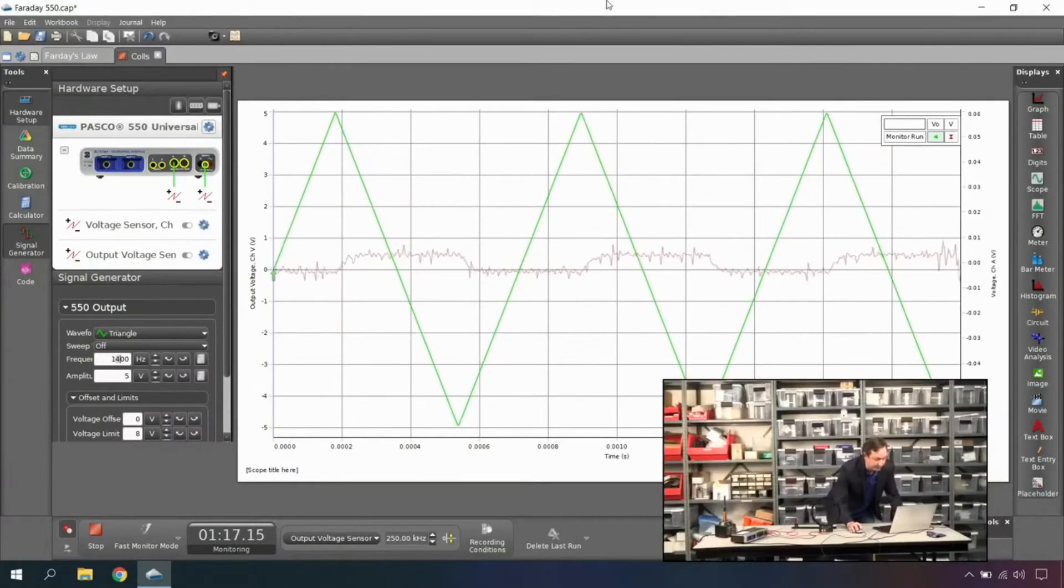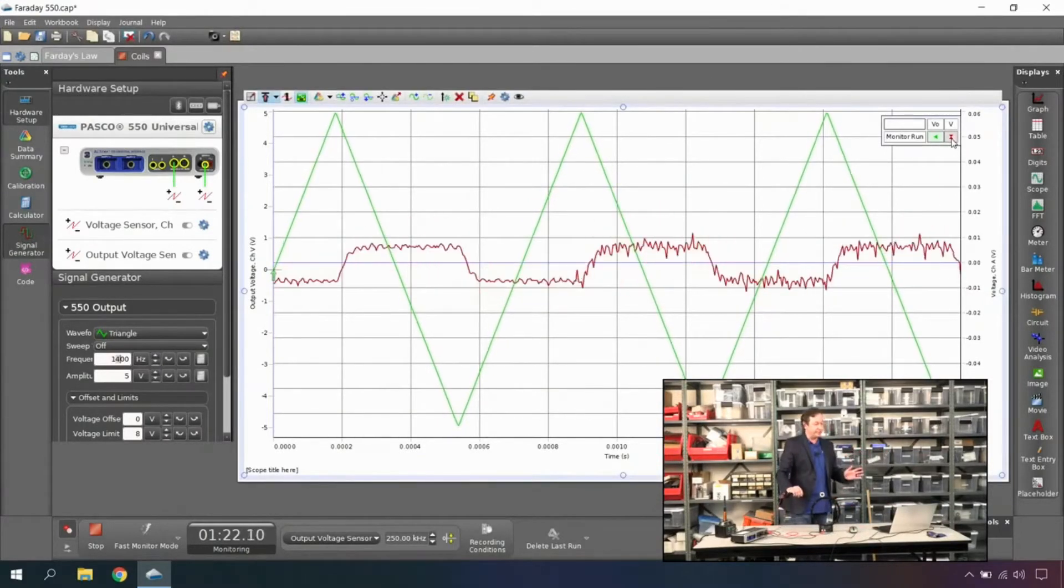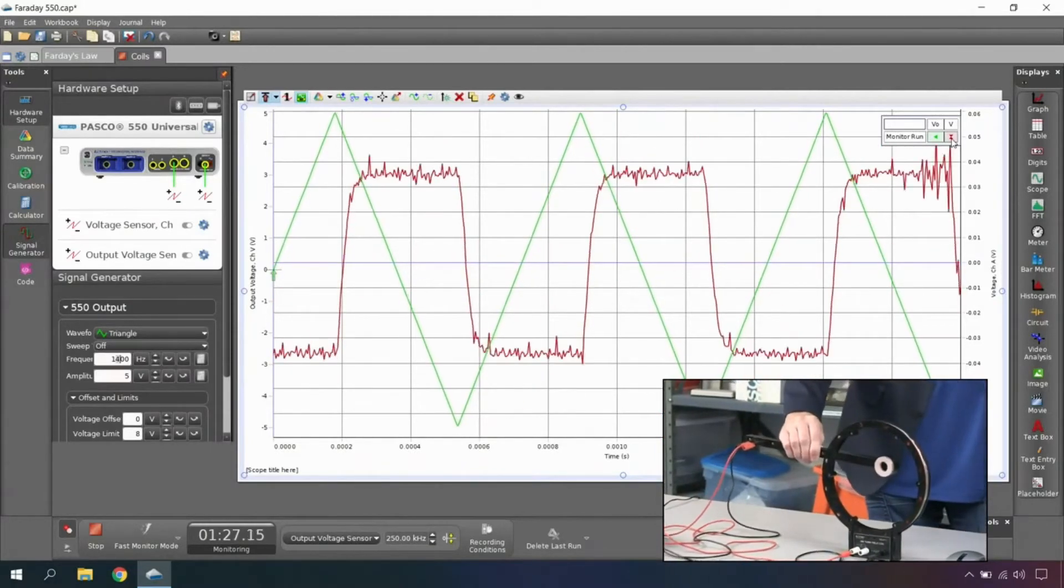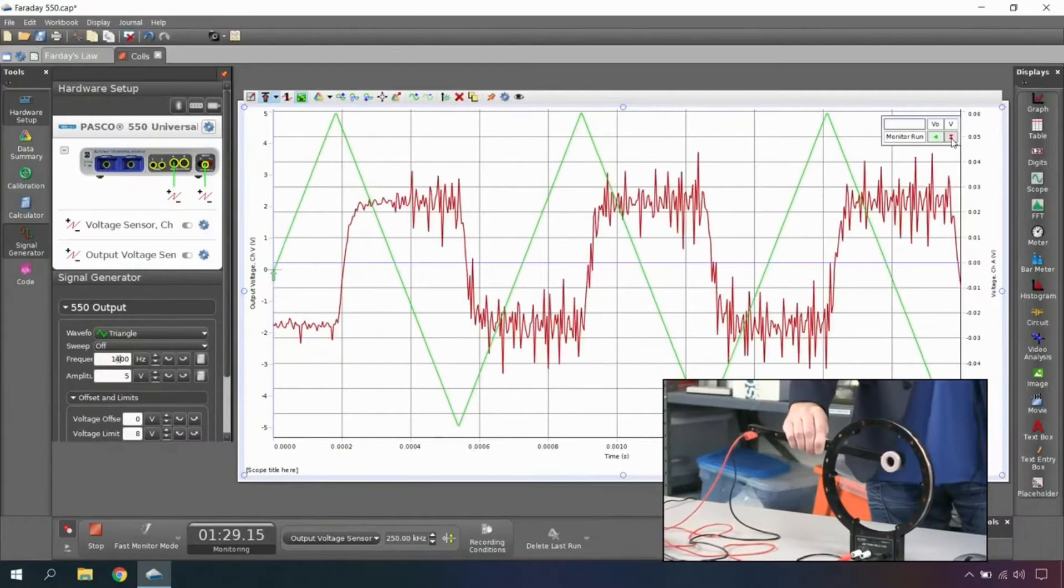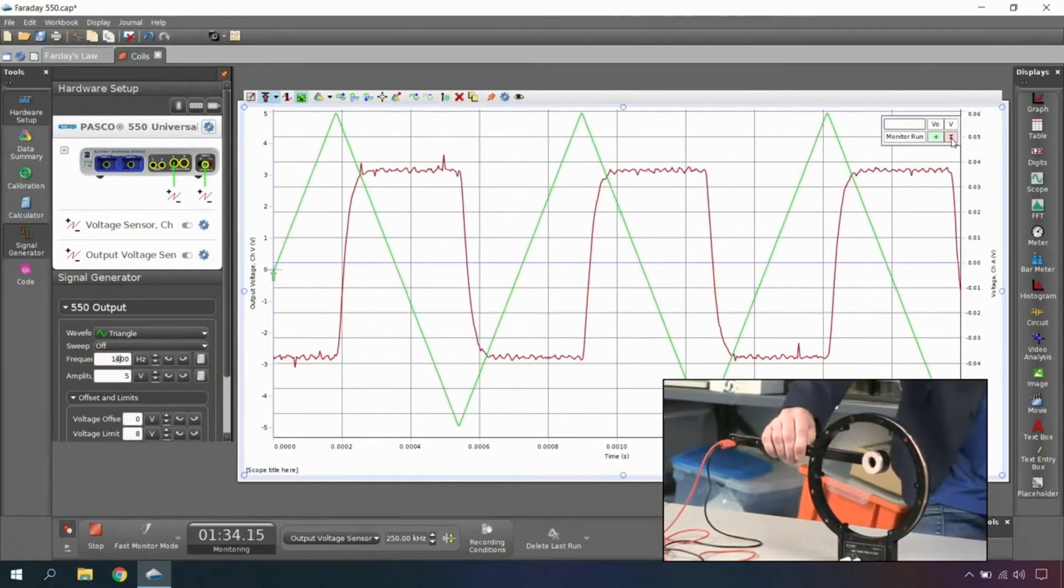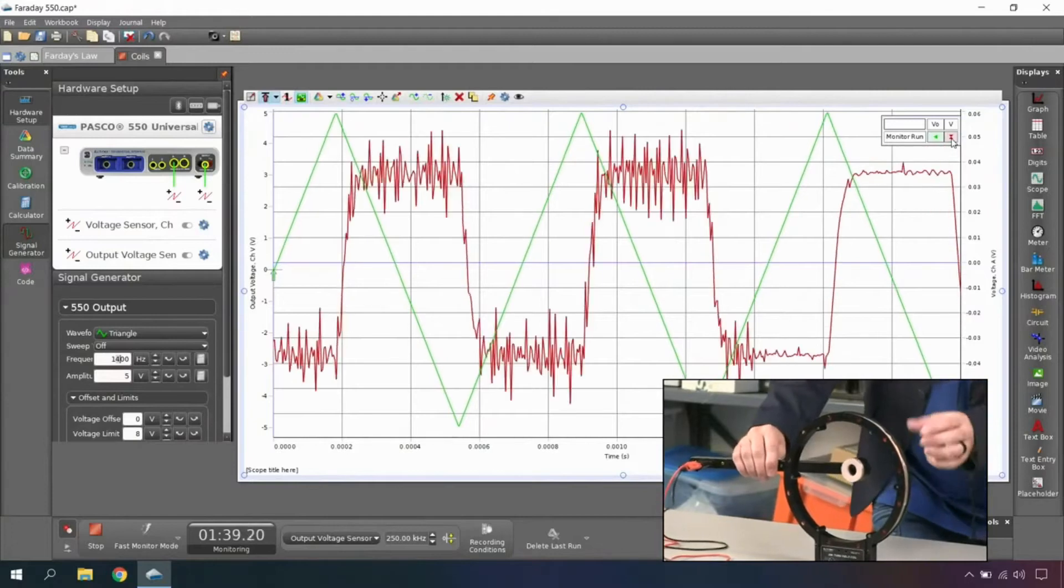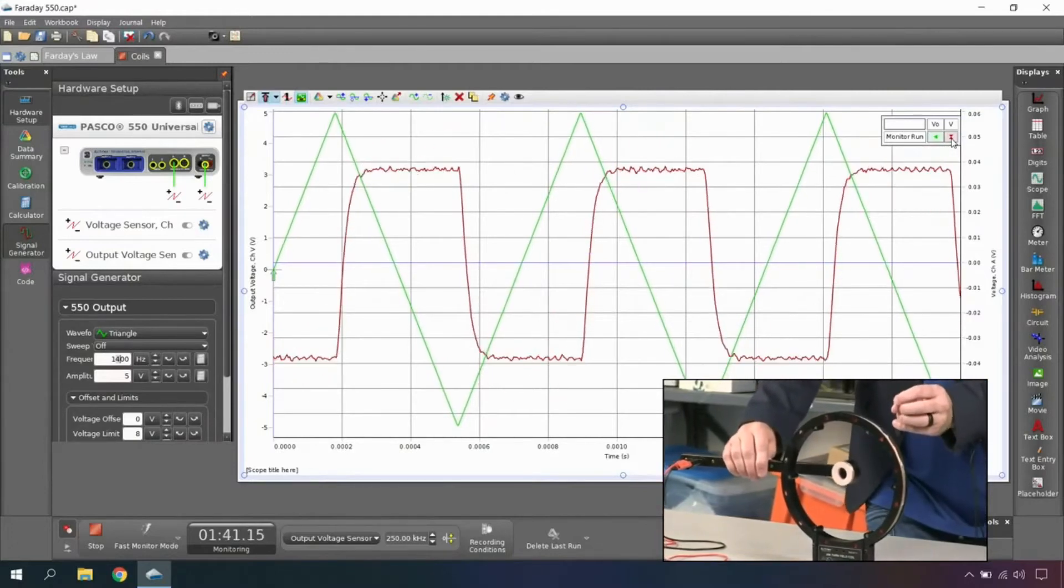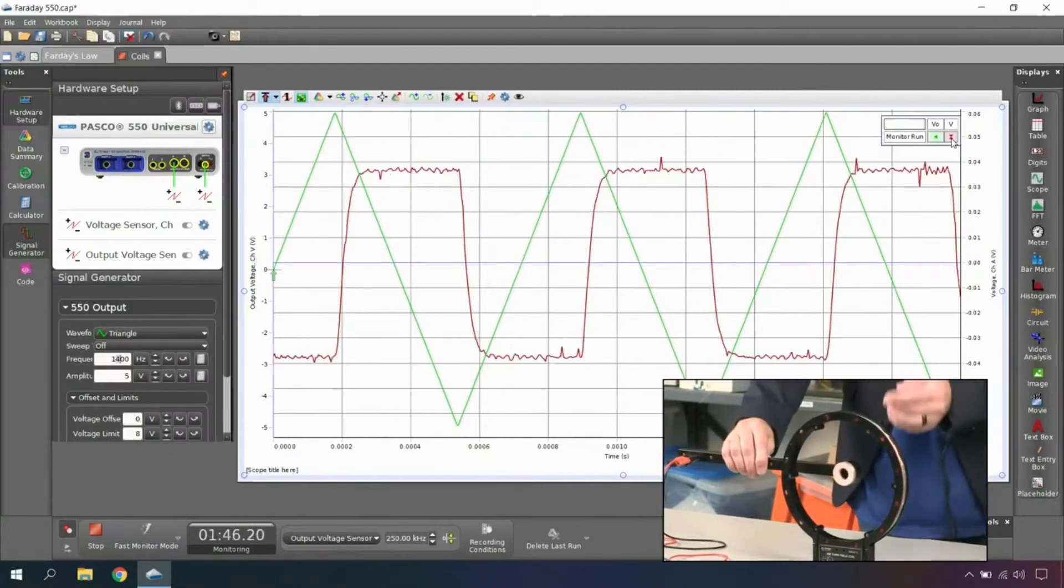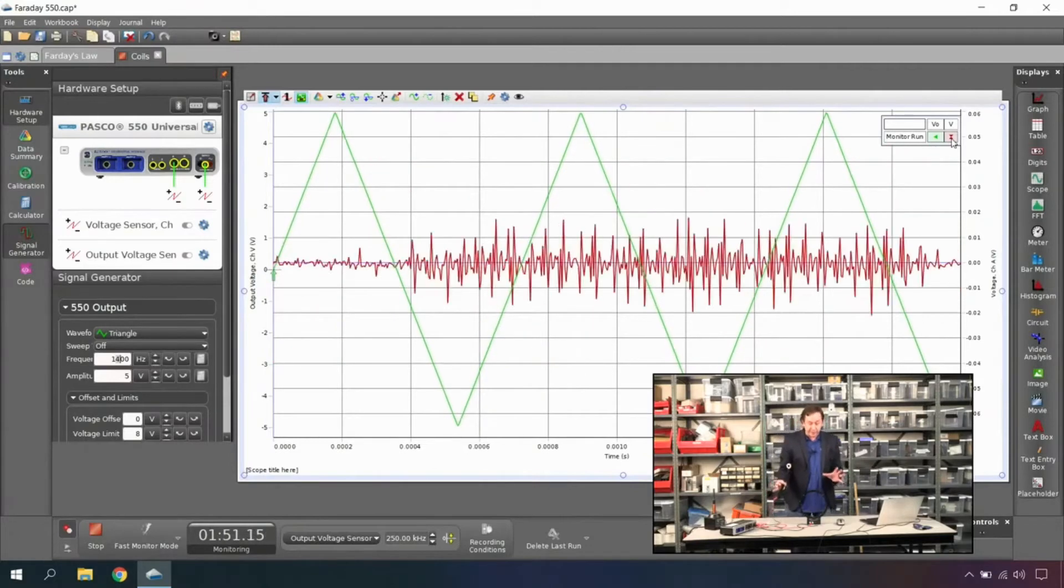Look at that! So notice that the induced EMF is what we would call a square wave. Let me select both of these so you can see them both. There we go. We've got some stray fields in here. Look at that! It's moments like this where I just love physics so much. You can see that as I get this in here, I am inducing an EMF, and that EMF is a square wave because that square wave is the time derivative of the driving potential, which is a triangle wave.